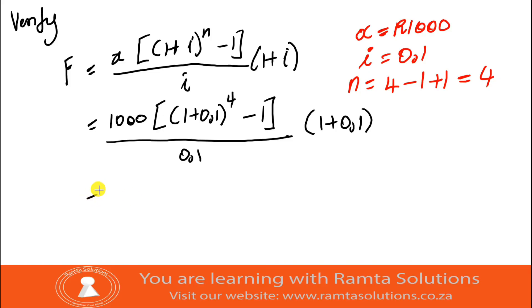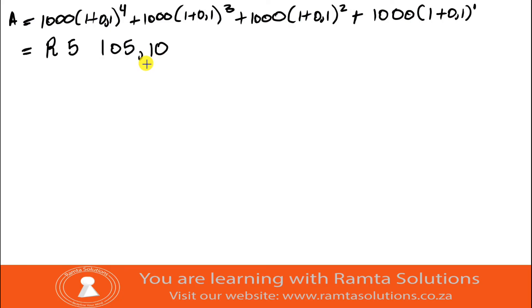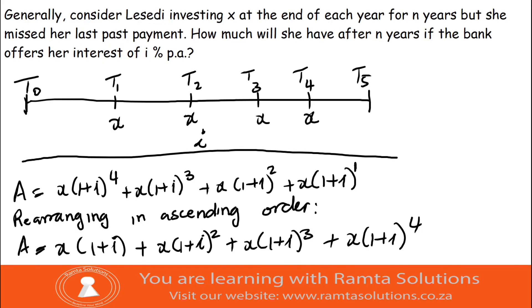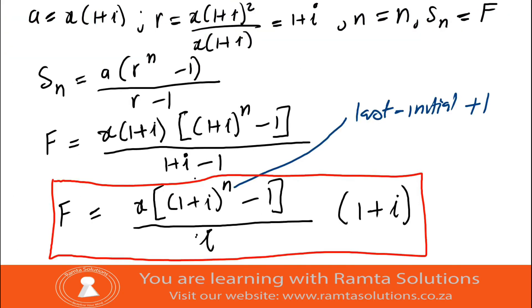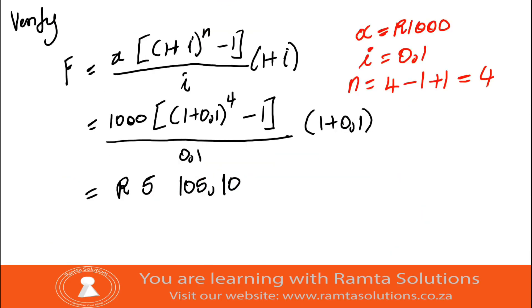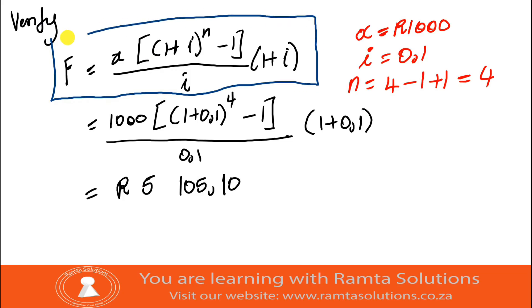The answer is R5,105 and 10 cents — confirming our earlier result. For a simple five-year case it's easy enough to write out each term, but for 10, 20, or even 40 years you'd run out of space and get tired. This is why we derive formulas in mathematics — to simplify your workings. Now you know how to use and derive this formula.